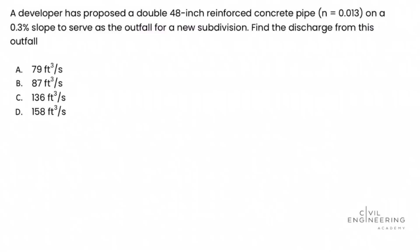Welcome back to Civil Engineering Academy. This is Matt and today we work a problem from the water resources breadth section of the Civil PE exam. A developer has proposed a double 48-inch reinforced concrete pipe, N equals 0.013, on a 0.3% slope to serve as the outfall for a new subdivision. Find the discharge from this outfall.